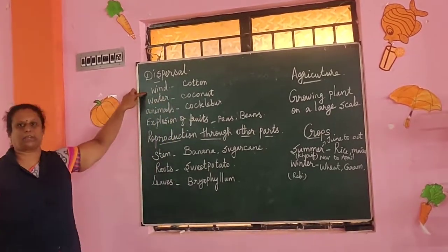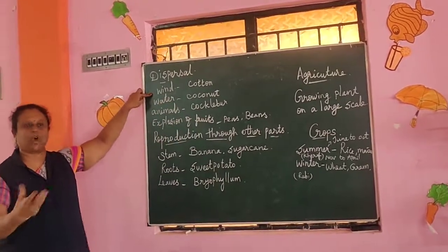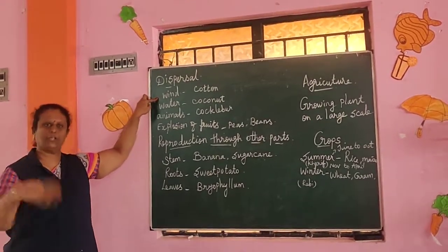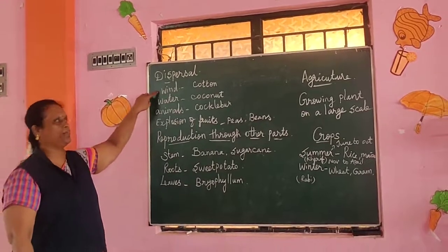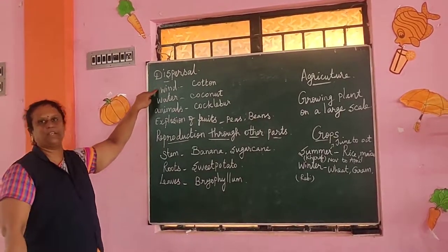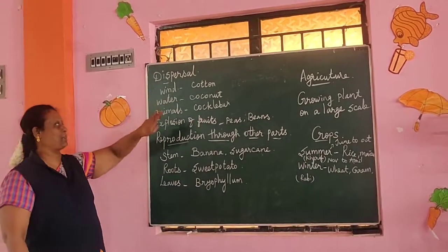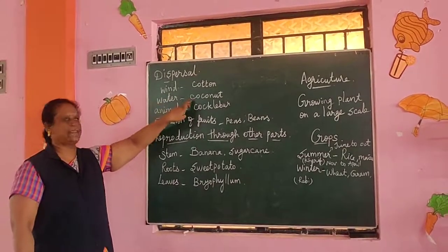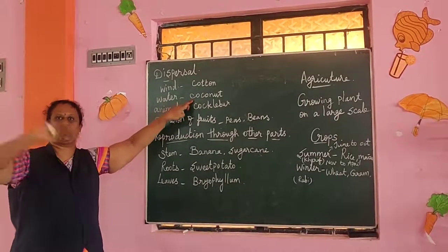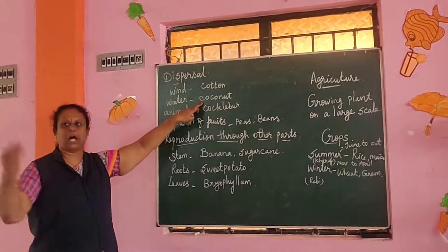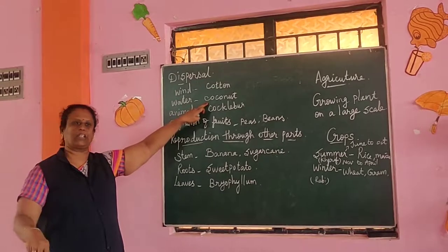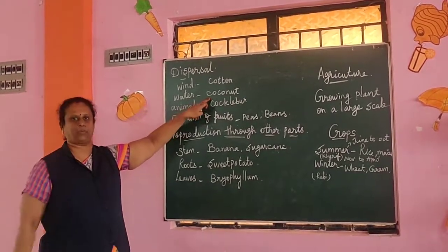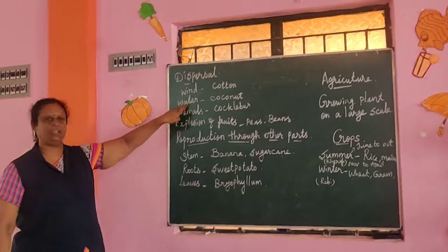Dispersal by wind — seeds like dandelion (kathla parathed) are carried by wind. Dispersal by water — seeds like coconut (kathla parathed) are carried by water.